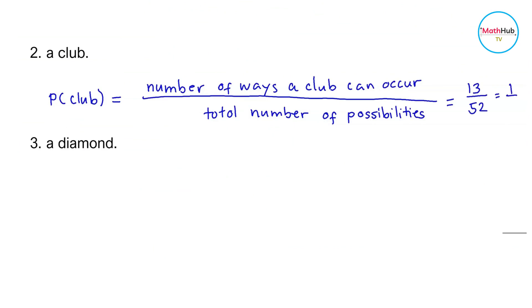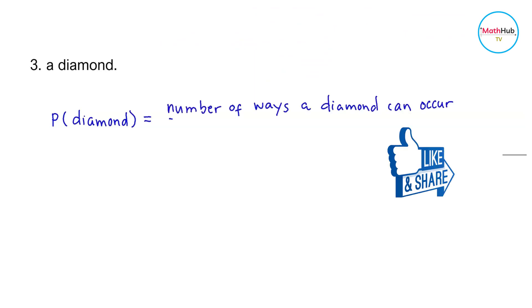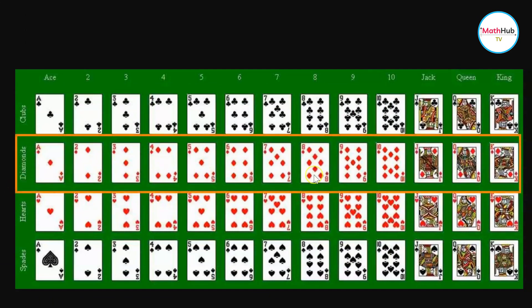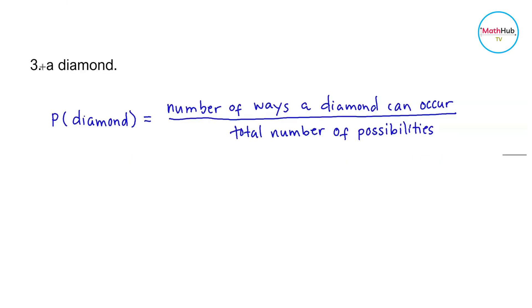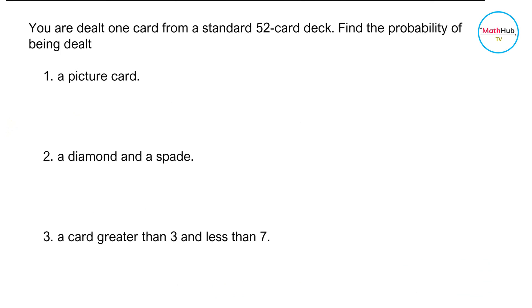Therefore, the probability of being dealt a club is 13 over 52, which simplifies to one fourth. Next, the probability of being dealt a diamond is equal to the number of ways a diamond can occur divided by the total number of possibilities. Looking at the 52 card deck, the number of diamonds is also equal to 13. Therefore, the probability is 13 over 52, which simplifies to one fourth.